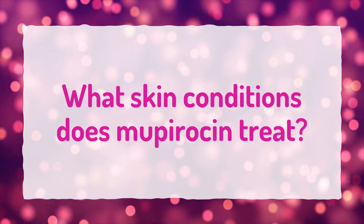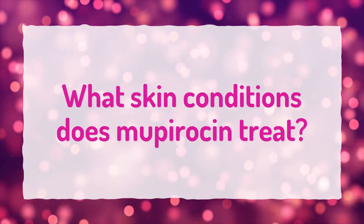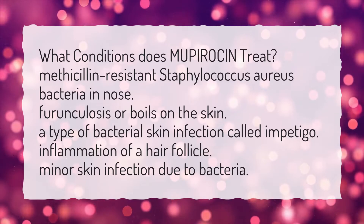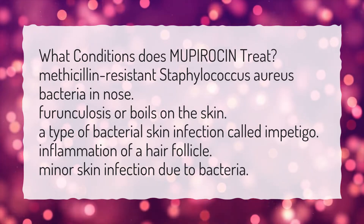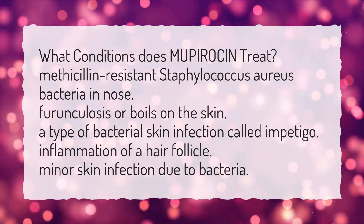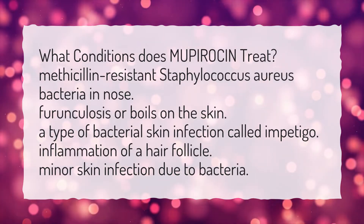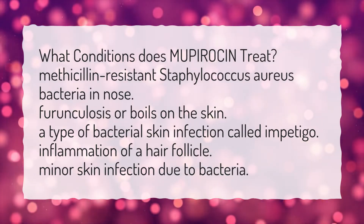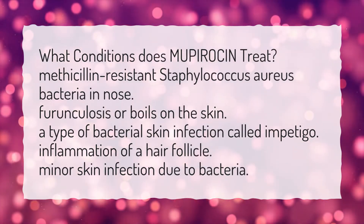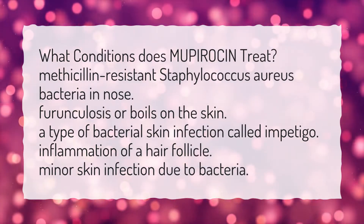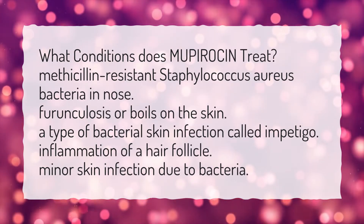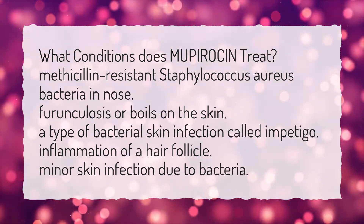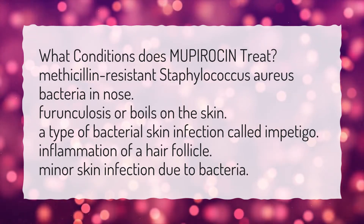What skin conditions does Mupiracin treat? Methicillin-resistant Staphylococcus aureus bacteria in the nose. Furunculosis or boils on the skin. A type of bacterial skin infection called impetigo. Inflammation of a hair follicle. Minor skin infection due to bacteria.